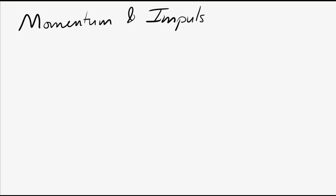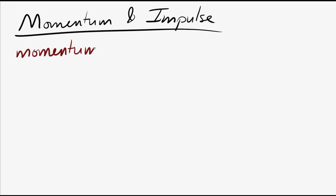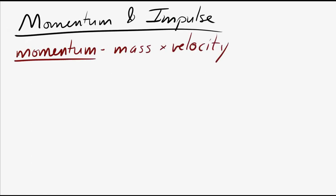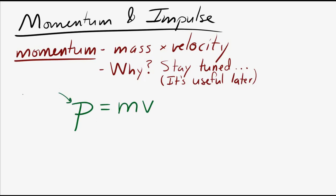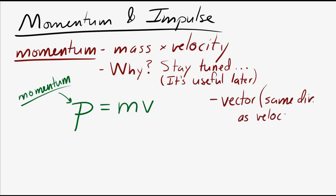Momentum and impulse — let's start with momentum. Momentum is mass times velocity. We represent momentum with lowercase p. Momentum is a vector; it gets its direction from velocity, so momentum and velocity always have the same direction.